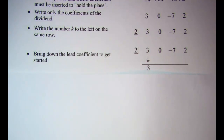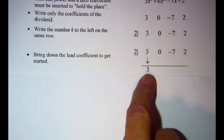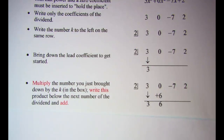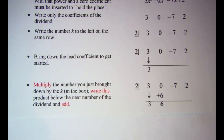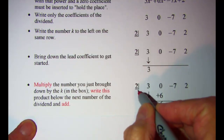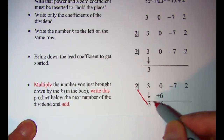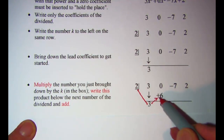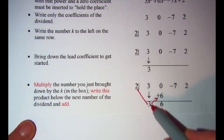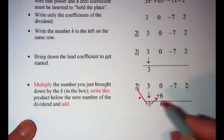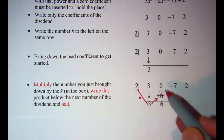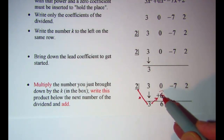To start, bring down the lead coefficient. Then the process we follow is: multiply that number by k — so 2 times 3 — and write that product below the second term in the dividend. Then add those numbers: 0 added to positive 6 gives me 6.